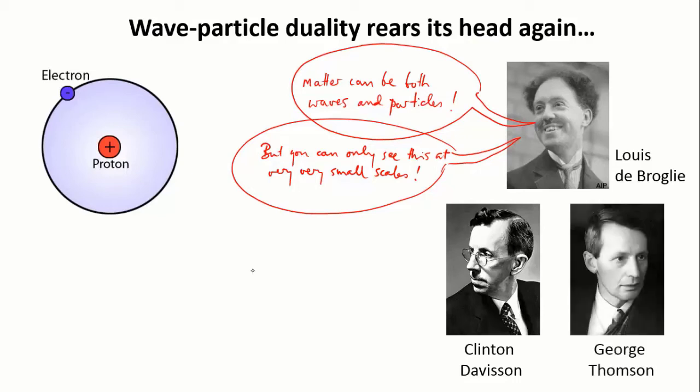Independently, in Aberdeen, George Thompson fired a beam of electrons through thin metal foil and showed the same thing.